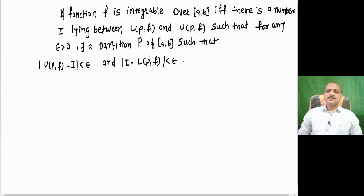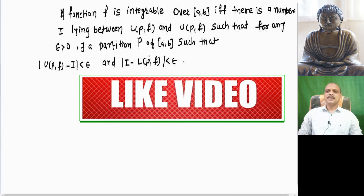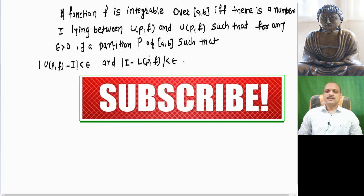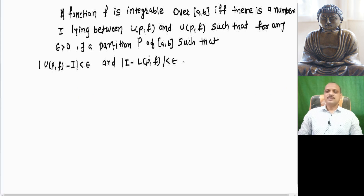Hello friends. In this video we see an important result about Riemann integrable functions. The result states that a function f is integrable over the closed interval [a, b] if and only if there is a number i lying between the lower sum and upper sum such that for any epsilon greater than 0, there exists a partition p of [a, b] such that upper sum minus i is less than epsilon and i minus lower sum is less than epsilon.